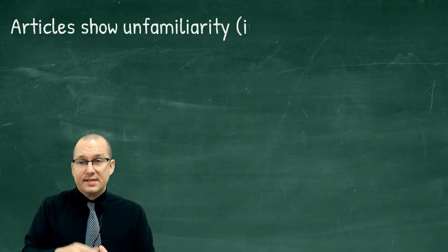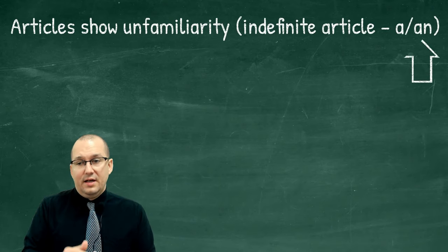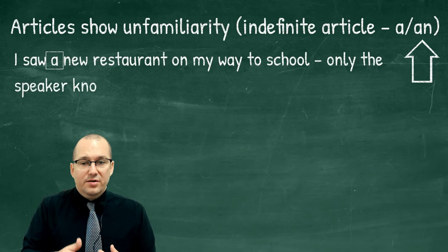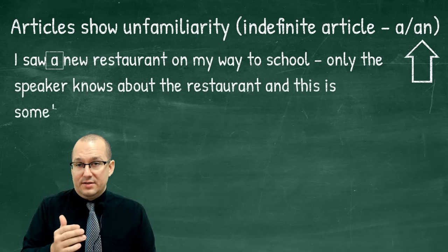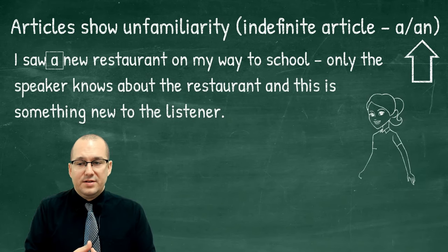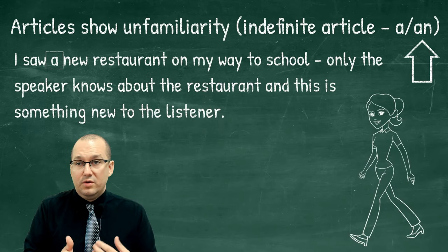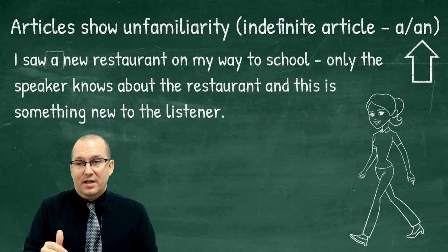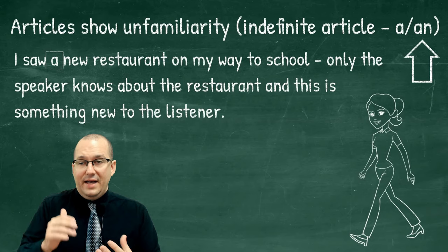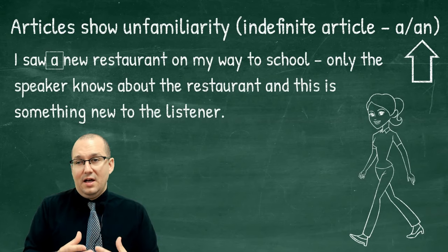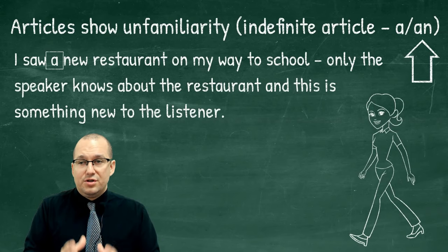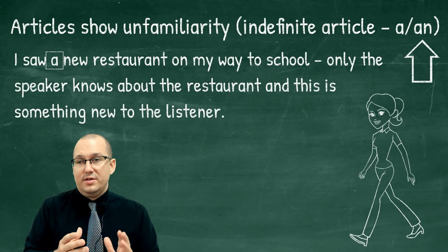Opposite to this, articles can also show unfamiliarity. These are called indefinite articles — 'a' or 'an.' For example: 'I saw a new restaurant on my way to school.' Only the speaker knows about the restaurant; it's something completely new to the listener. That's why we say 'a new restaurant' — it's new for the speaker, it's completely new to the listener, and there is one restaurant. So: 'a.' It's used to show something new that only one person knows, or maybe neither person knows.